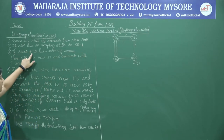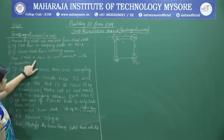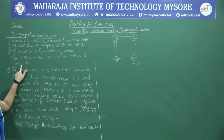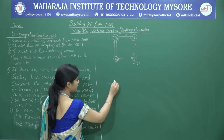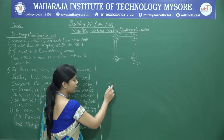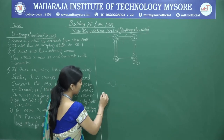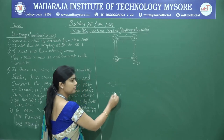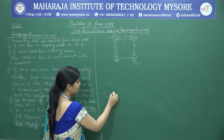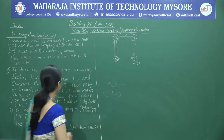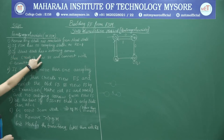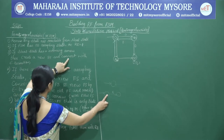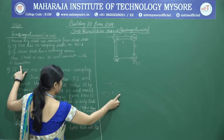Step 3: if the start state has an incoming arrow, create a new start state and connect it to the old start state via an epsilon transition. So if there is any incoming arrow to the start state, we create a new start state and connect the old start state via the epsilon transition.